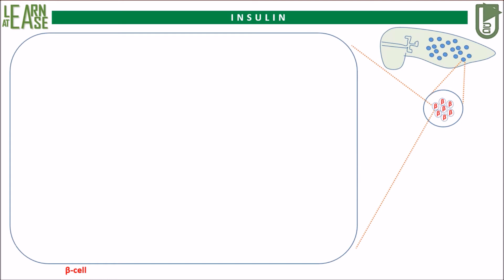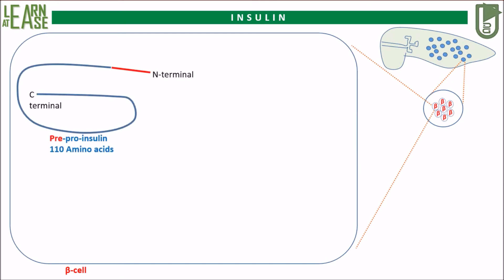Briefly, the insulin gene located on the short arm of chromosome 6 is transcribed and translated to produce a short peptide of 110 amino acids known as pre-proinsulin. At the end terminal of this peptide, there is a short sequence of hydrophobic amino acids known as the signal peptide. With the help of the signal peptide, pre-proinsulin crosses the membrane of the rough endoplasmic reticulum and enters the lumen.